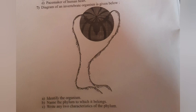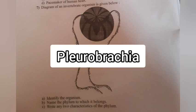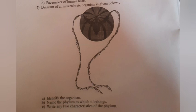Question 7: A diagram of an invertebrate organism is given. A. Identify the organism. B. Name the phylum to which it belongs. C. Write any two characteristics of the phylum. Answer: A. Pleurobrachia, B. Phylum Ctenophora. Characteristics: 1. Ctenophores are commonly known as sea walnuts or comb jellies. 2. They are exclusively marine. 3. They are radially symmetrical. 4. They are diploblastic organisms.